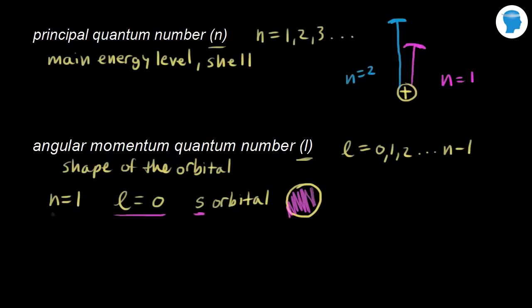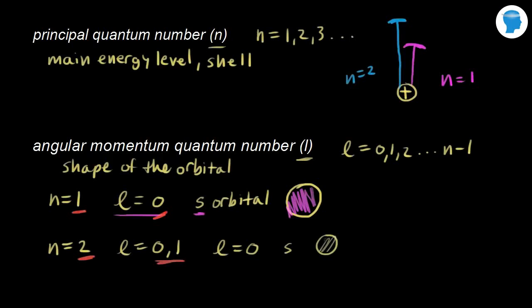For n equal to two, the allowed values for l go from zero up to n minus one, which is one. So l can be zero or one — two possible values. Notice that the number of allowed values for l equals n: for n equal to one, one allowed value; for n equal to two, two allowed values. l equal to zero still corresponds to an s orbital shaped like a sphere.